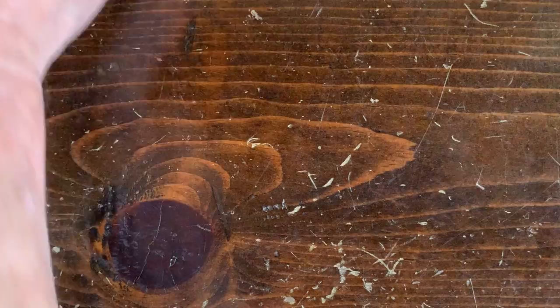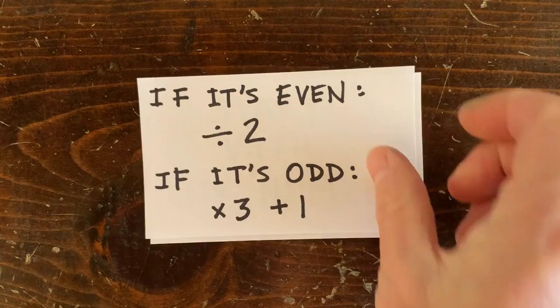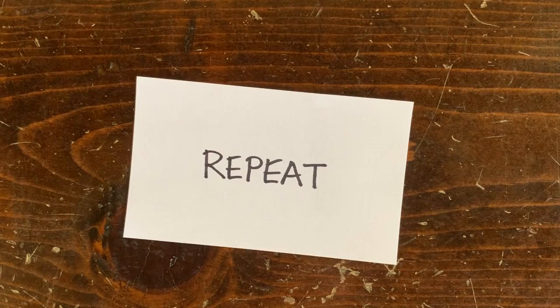The 3n plus 1 conjecture goes like this. Pick any number. If it's even, cut it in half. If it's odd, multiply by 3 and add 1. Then repeat. Okay, let's pick a number to start with, say, 10.